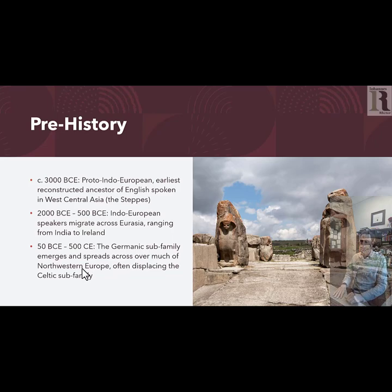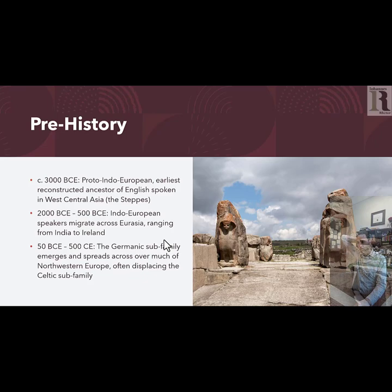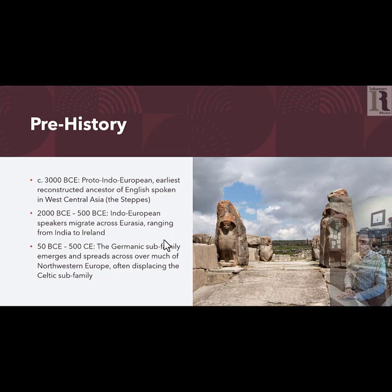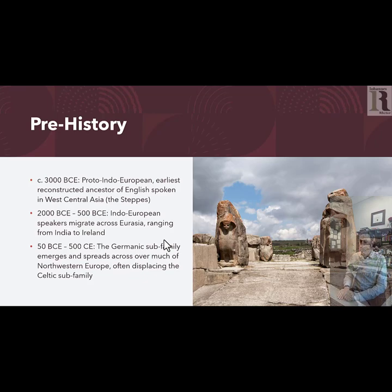From around 2000 BCE to 500 BCE, Indo-European speakers migrated everywhere — they exploded across Eurasia, going to India on one part of Asia and all the way to Ireland and to the Iberian Peninsula where Spain is in the west. One of the reasons they spread so widely and were so successful is that they were one of the first peoples to domesticate horses, which gave them an advantage in mobility and in military affairs. The first Indo-Europeans to get to Western Europe were speakers of Celtic languages, and they continued to be Celtic speakers in northwestern France and parts of the British islands. But they were then overrun by Germanic speakers, a different subfamily of Indo-European, who spread over much of northwestern Europe, displacing and subsuming speakers of Celtic languages.